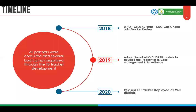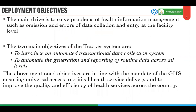We carried out our deployment in all 260 districts in the country. As we had earlier deployed for HIV, we now also have TB Tracker running in all 260 districts of Ghana.